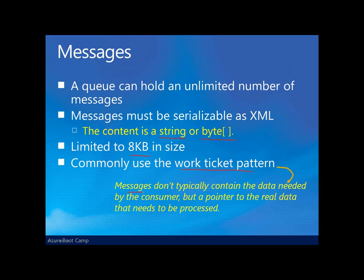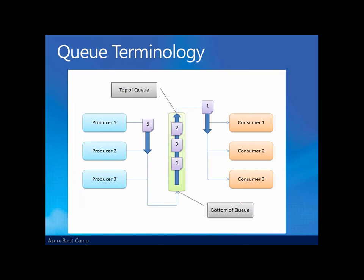The work ticket pattern means that messages we create won't actually contain the data needed for a component to get its work done, but rather a pointer to the real data — presumably in some other storage mechanism like table storage or SQL Azure. The message serves as a token about what work needs to be done, but not all the data necessary to complete that work. Any component placing a message into the queue is called a producer; any component grabbing and using a message is called a consumer. Queues are first-in, first-out, so producers put messages on the bottom while consumers pull from the top.